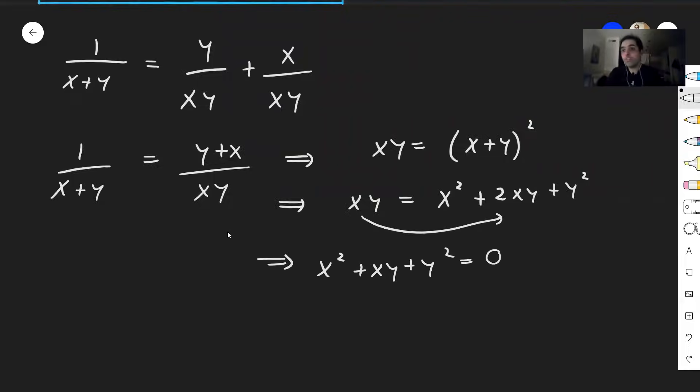Now at this point you're probably stuck, but here's a very clever insight. Notice this is a quadratic equation in x, because this becomes x squared plus y x plus y squared equals 0.